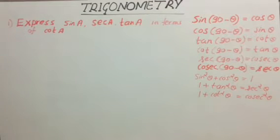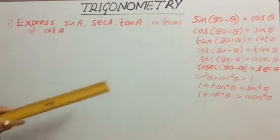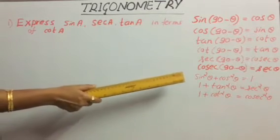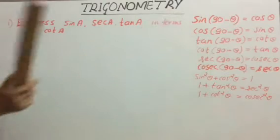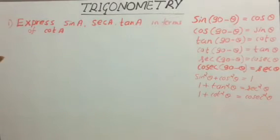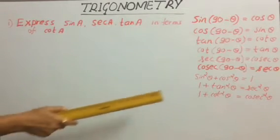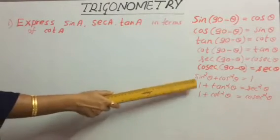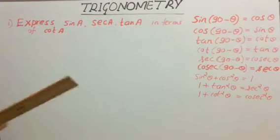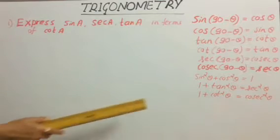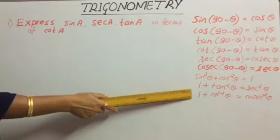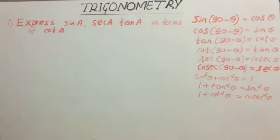For this, let us use the identities: sin²θ + cos²θ = 1, 1 + tan²θ = sec²θ, and 1 + cot²θ = cosec²θ.